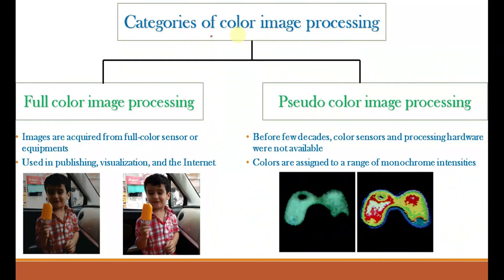Color image processing can be broadly categorized into two categories. First is full color image processing and second is pseudo color image processing. Full color image processing processes images captured with full colors — images acquired from full color sensors or equipment such as color TV cameras or color scanners — and it is widely used in publishing, visualization, and the internet.